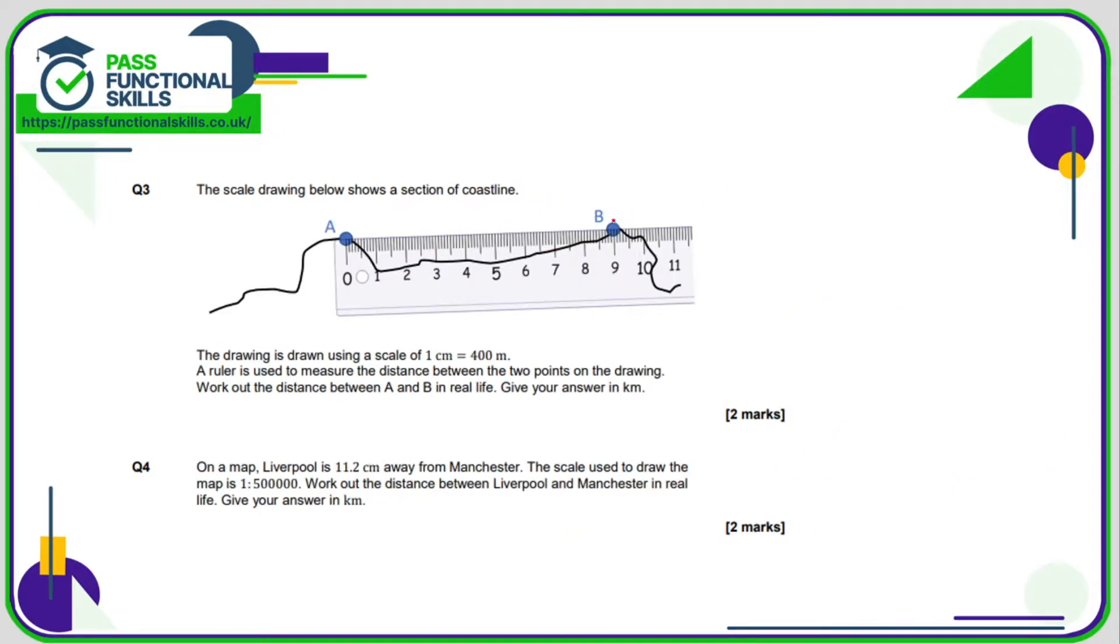In question number 3, we can see it's a distance of 9 centimeters. So if 1 centimeter equals 400 meters, then 9 centimeters equals 9 times 400. You can use a calculator if you want, but that's 3,600 meters. We need to give an answer in kilometers, which means we need to divide this number by 1,000 because there's 1,000 meters in a kilometer.